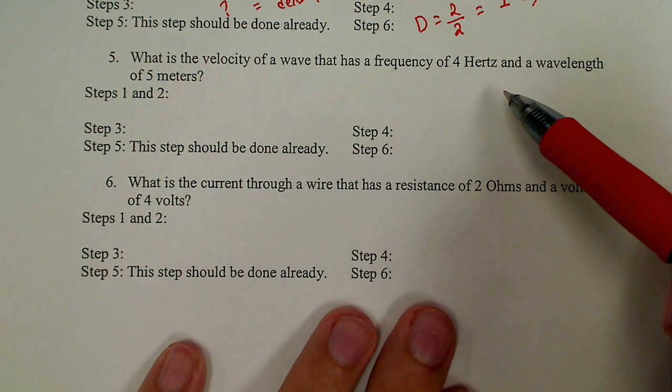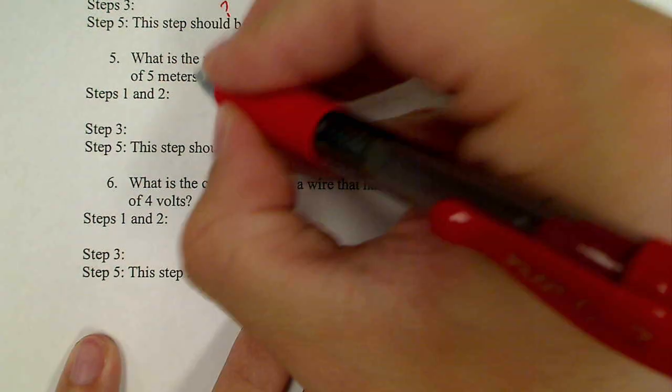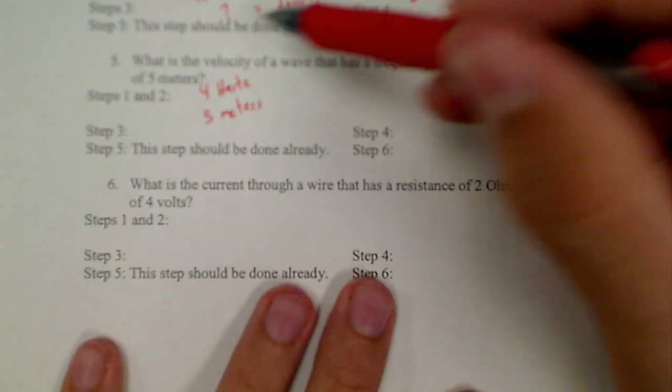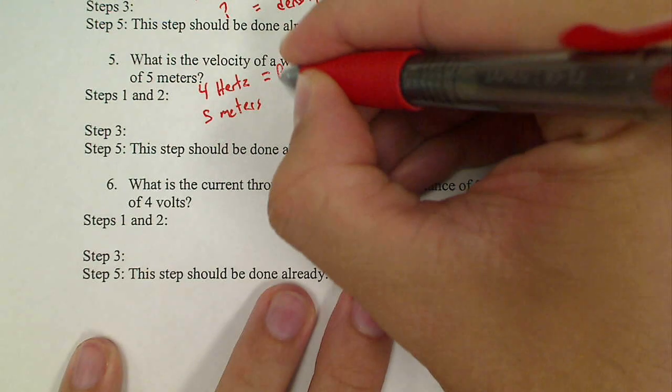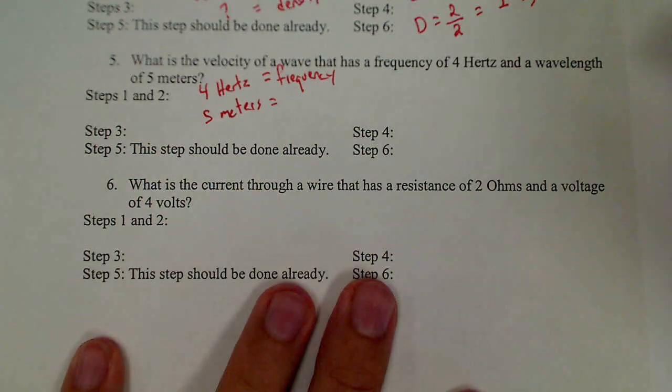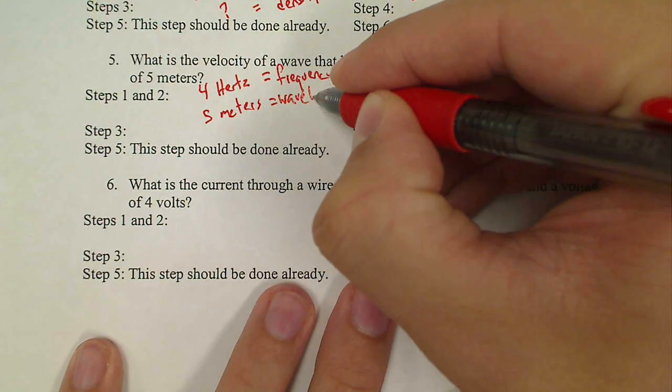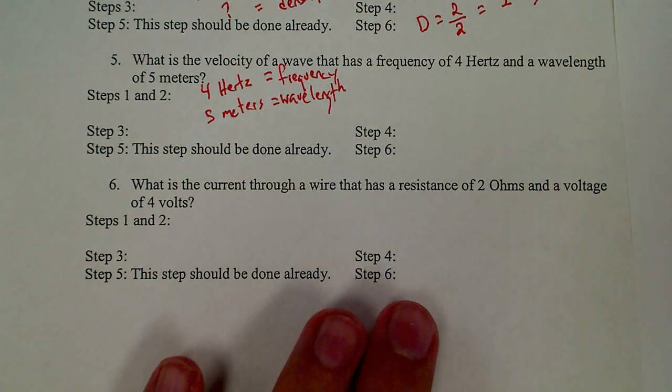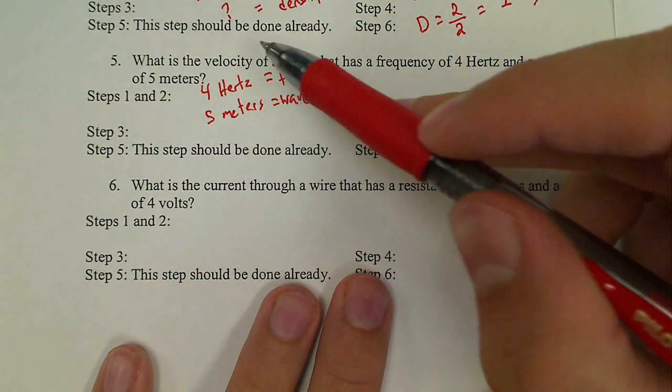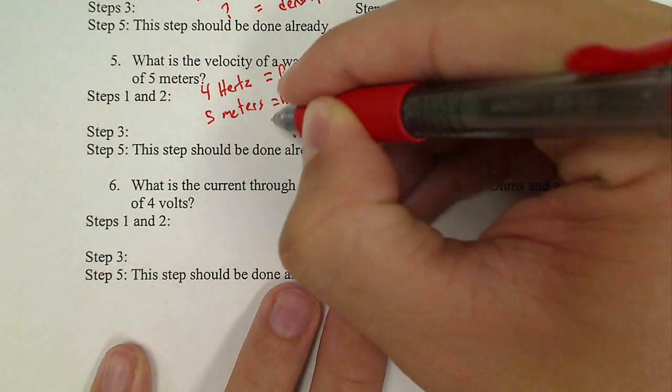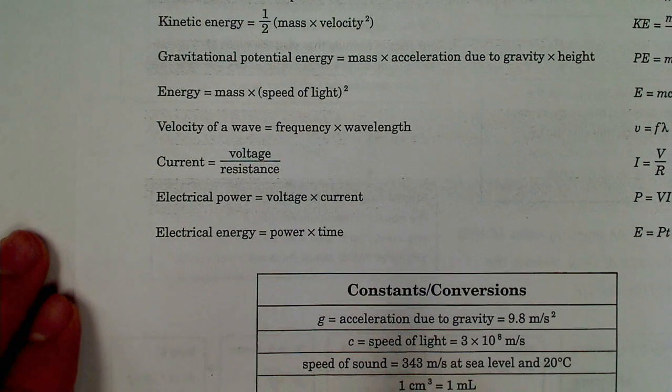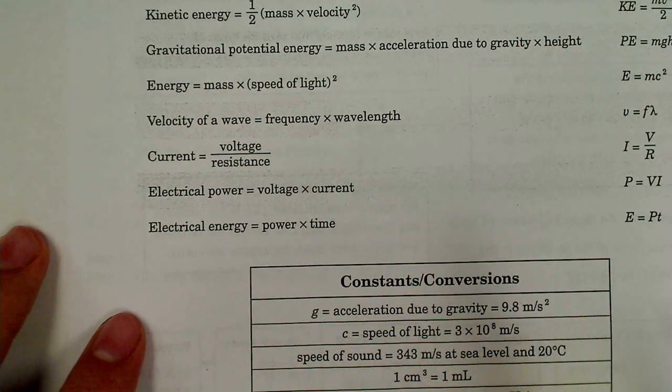Number 5. What is the velocity of a wave that has a frequency of 4 hertz and a wavelength of 5 meters? Step 1, write down my numbers. 4 hertz, 5 meters. Step 2, identify frequency of 4 hertz. Hertz measures frequency. And a wavelength of 5 meters. Meters can measure distance or wavelength. Wavelength is a type of distance, the length of the wave. Step 3, what am I looking for? The velocity of a wave. I'm looking for an equation for velocity, frequency, and wavelength. Velocity of a wave equals frequency times wavelength. We use this funny little symbol here for wavelength, this is called lambda. It's a Greek letter. So V equals F lambda.